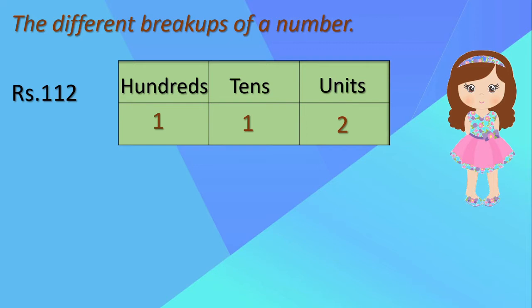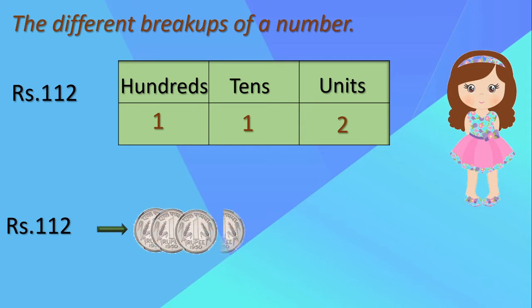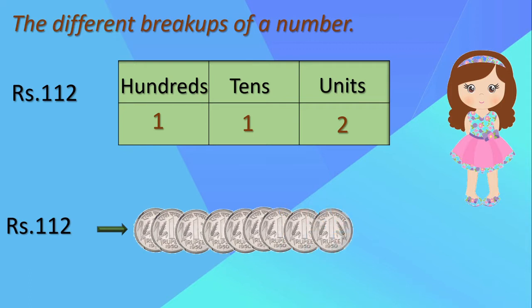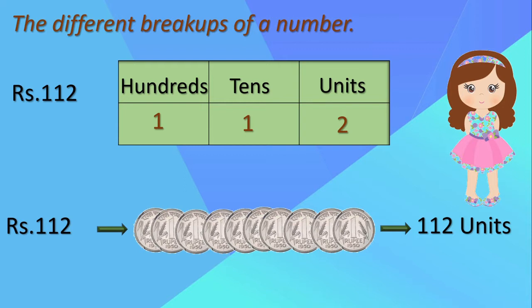Here you can see a girl. She also brought 112 rupees, but she brought 112 one-rupee coins. She brought 112 units. You know that one-rupee coins come under the unit column. The amount is the same — rupees 112 — but she brought it in the form of one-rupee coins. This is one way of representing a number: in the units form.